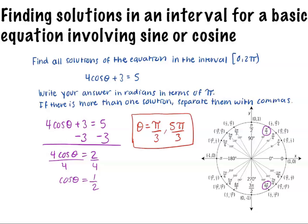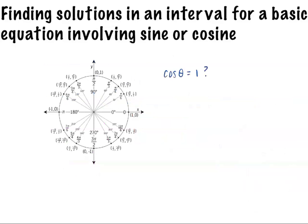What if we were trying to find cosine θ equals 1? Would the answer be 0 and 2π since they are the same?